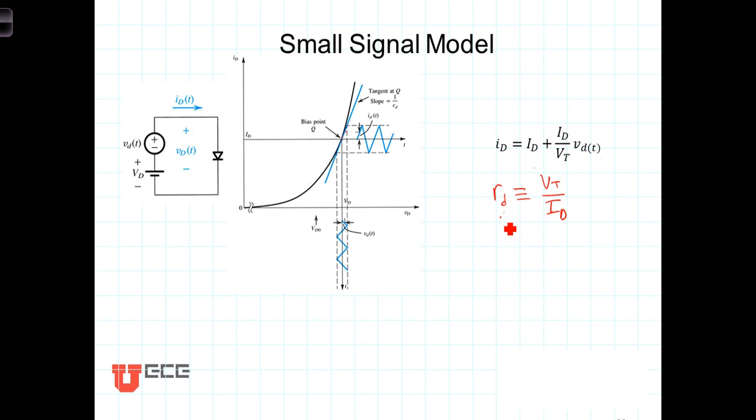With that small signal resistance then, we can represent this, or we can then calculate the small signal response by taking this and looking at just, or deactivating the voltage source and looking at just the response of the time-varying component, little v sub d of t.